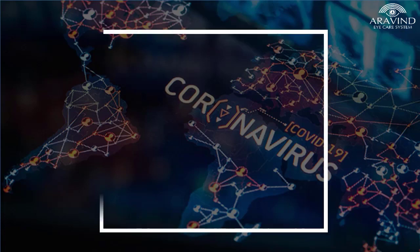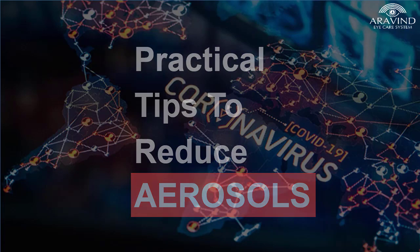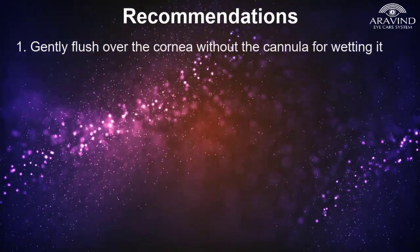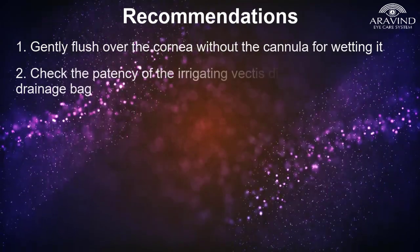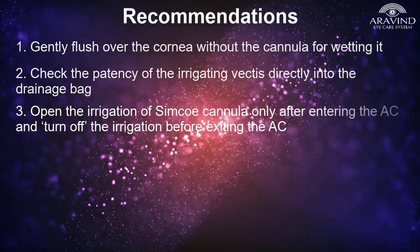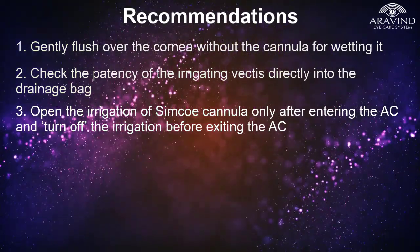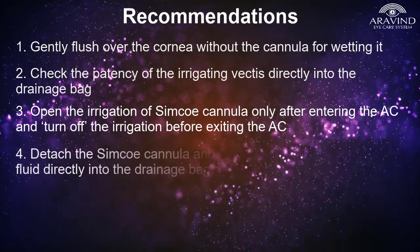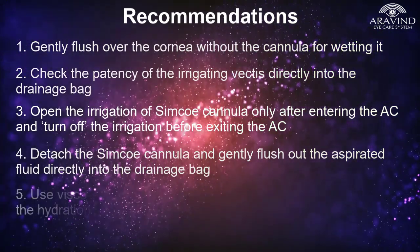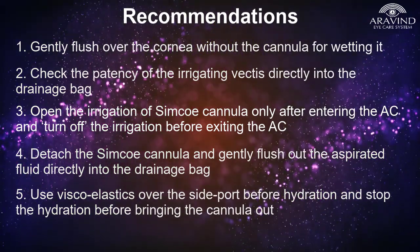To summarize, here are the 5 practical tips to reduce aerosolization during manual small incision cataract surgery in the COVID-19 period: Gently flush over the cornea without the cannula for wetting it. Check the patency of the irrigating vectus directly into the drainage bag. Open the irrigation of the Simcoe cannula only after entering the anterior chamber and turn off the irrigation before exiting the anterior chamber. Detach the Simcoe cannula and gently flush out the aspirated fluid directly into the drainage bag. Use viscoelastics over the side port before hydration and stop the hydration before bringing the cannula out.